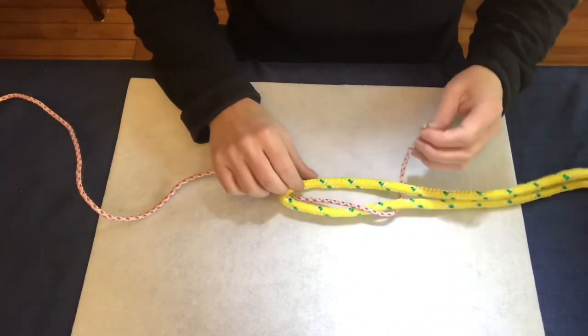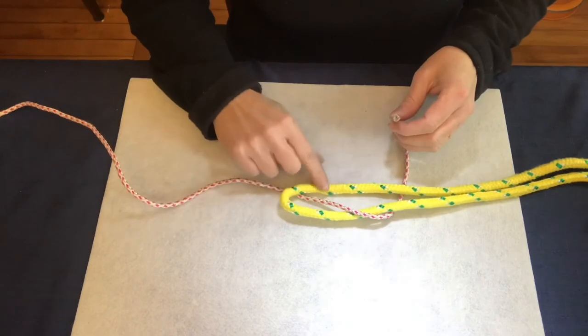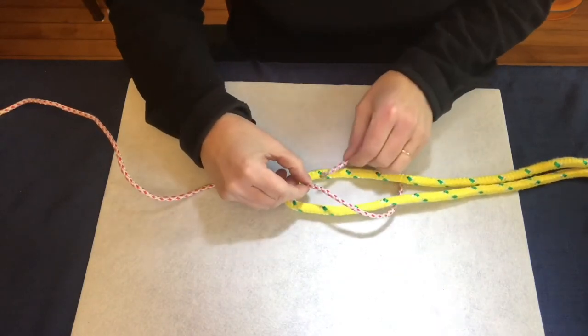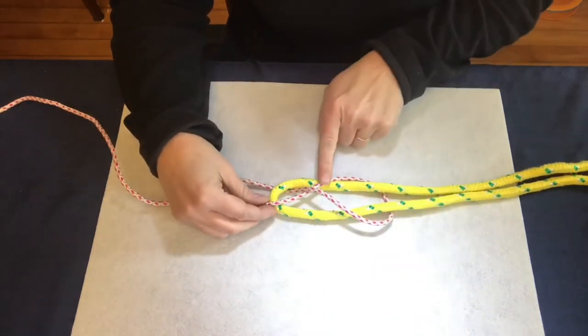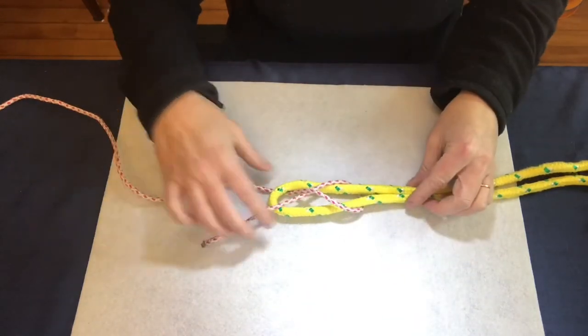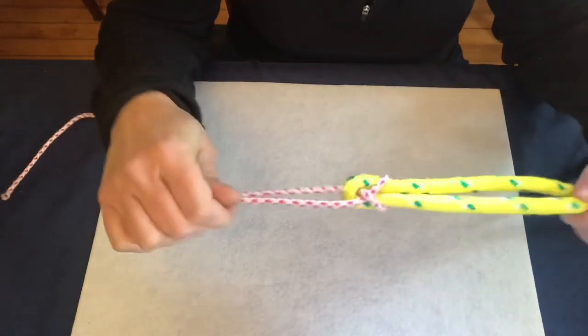So you want to take this end and go over both ropes but underneath the bridge. So go under but over this last rope. See how it's over both, and you pull together and you have your sheet bend.